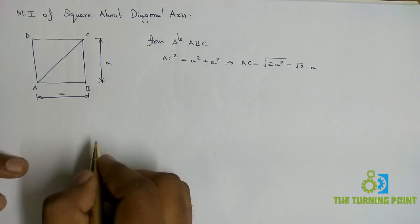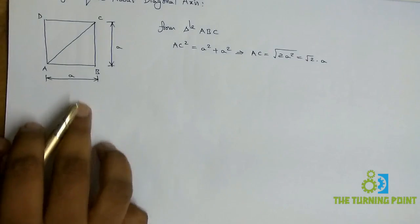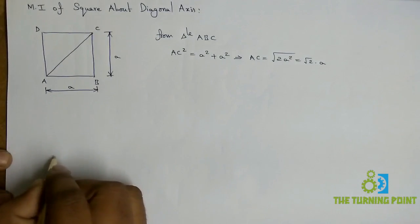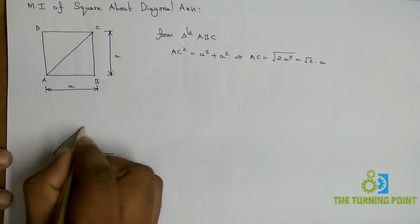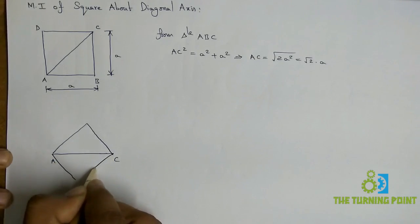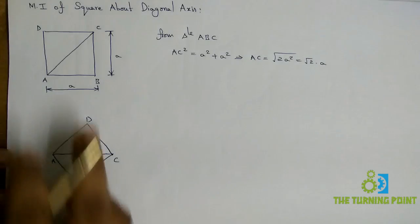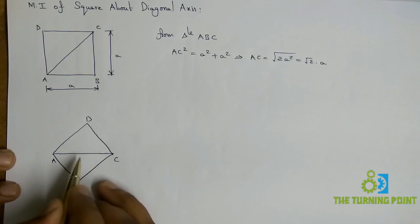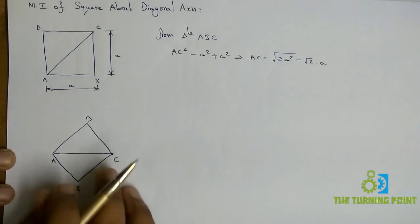Next, we are supposed to calculate the moment of inertia about the diagonal axis. Let us make the diagonal horizontal. I am drawing the square rotated so that AC is horizontal. Here AC is the horizontal axis. So if I calculate the area moment of inertia of the square about the x-axis, then it is nothing but the area moment of inertia about the diagonal axis for this geometry.